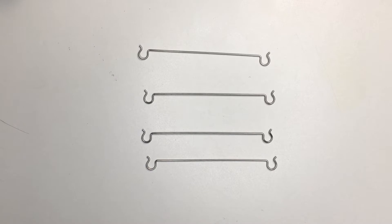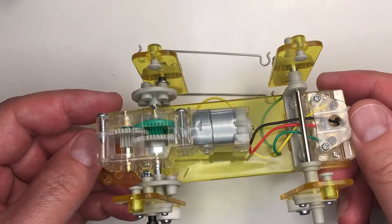For this step, all you're going to need are these four hooks. Oh, oh yeah, and the rest of your assembled robot.